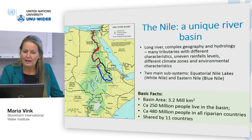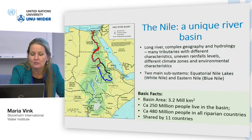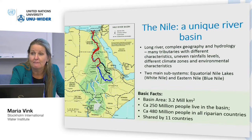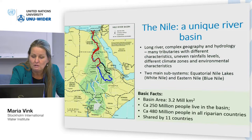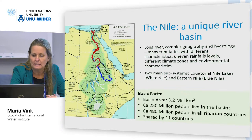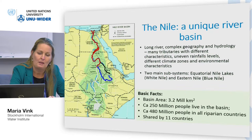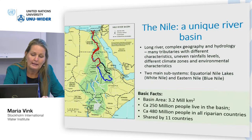About the Nile — it's a quite unique river basin. Firstly, it's shared by 11 countries, which is unusual in itself. It's extremely long and very uneven in terms of rainfall, climate zones, and poverty levels. So very complex.